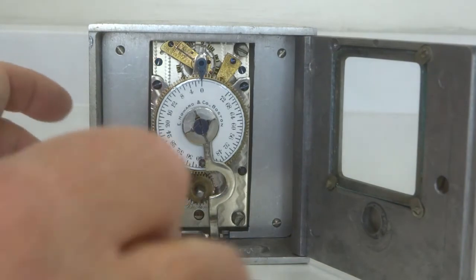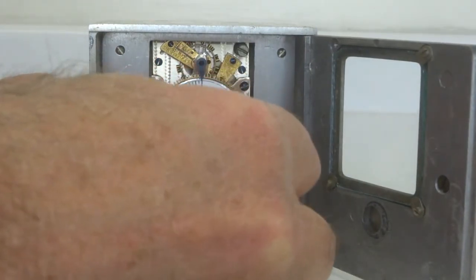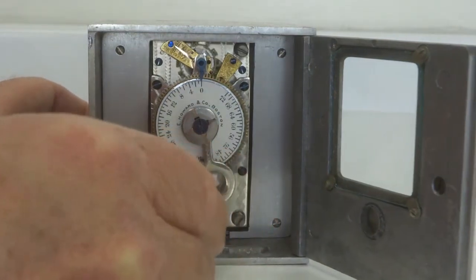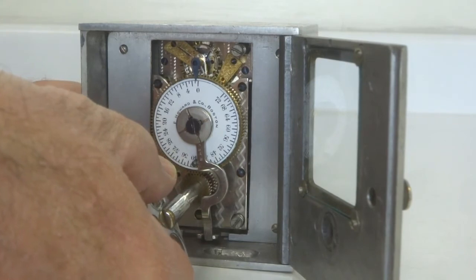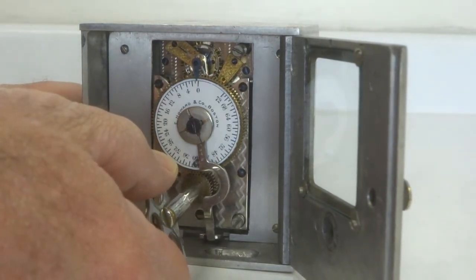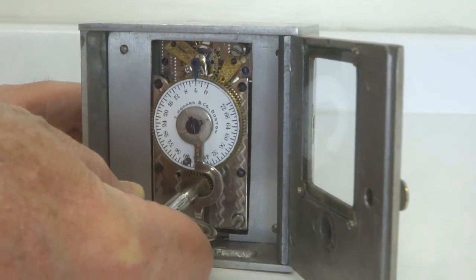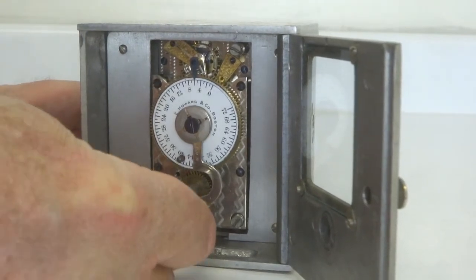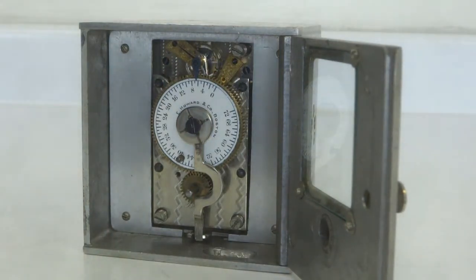I will now demonstrate by winding this up. I'm going to move it over this way so you can see it a little better. You now can see this armature moving a little bit to the left, and the time lock now takes off.